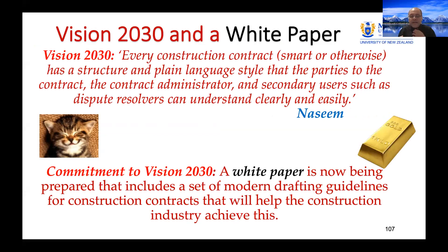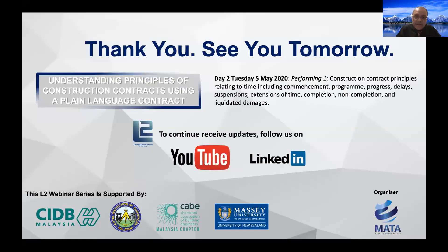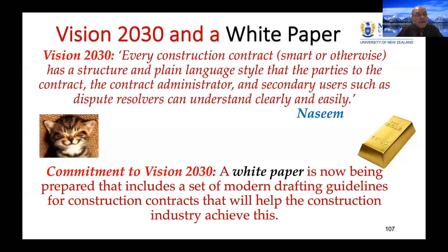I end with this vision for the future: by 2030, every construction contract — smart or otherwise — has a structure and plain language style that parties and secondary users like dispute resolvers can understand clearly and easily, at least on second reading. I'm now preparing a white paper, and when it is ready I will share it worldwide. All of you here are welcome to critique it, and I hope you will come back tomorrow.